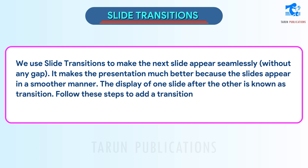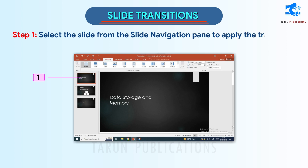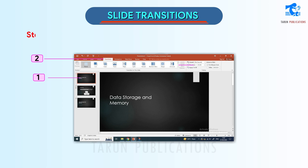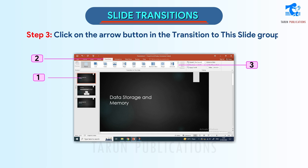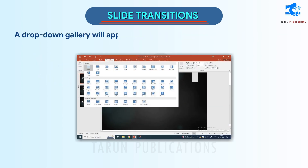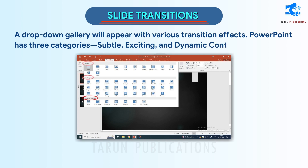Follow these steps to add a transition. Step 1: Select the slide from the Slide Navigation Pane to apply the transition. Step 2: Click on the Transitions tab. Step 3: Click on the arrow button in the Transition to This Slide group — a drop-down gallery will appear with various transition effects. PowerPoint has three categories: Subtle, Exciting, and Dynamic Content.